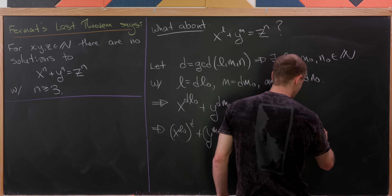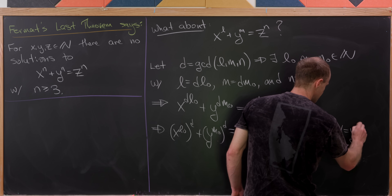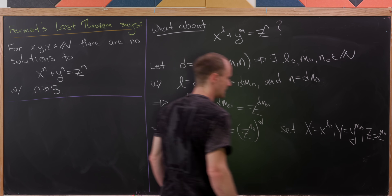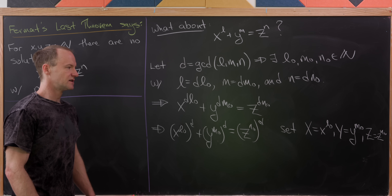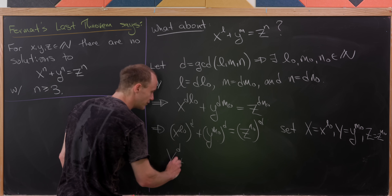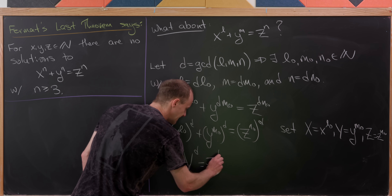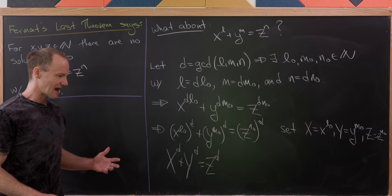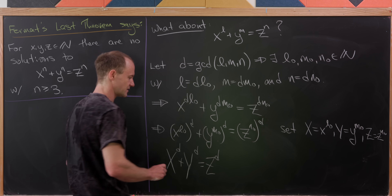Now let's introduce some notation. Set capital X equal to x to the l0, capital Y equal to y to the m0, and capital Z equal to z to the n0. Rewriting the equation using these substitutions gives us X to the d plus Y to the d equals Z to the d — we've brought it back down to an equation that looks like the equation inside of Fermat's Last Theorem.